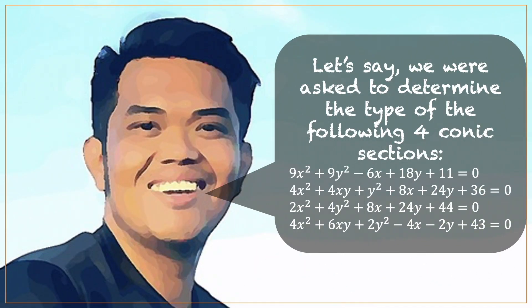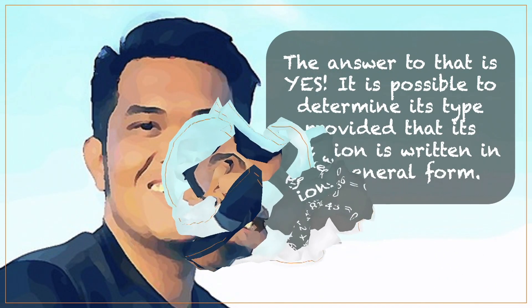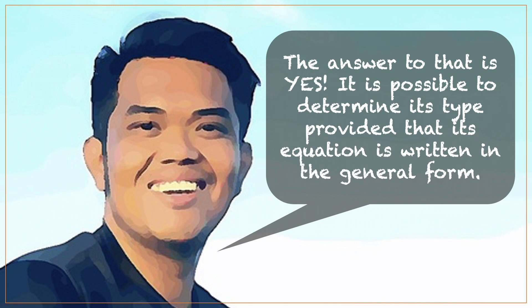For instance, let's say we were asked to determine the type of the following four conic sections below. Did you know that it is possible to determine the type of conic section without graphing it? It is possible by solving its discriminant and making sure that the numerical values of A, B, and C satisfy the given conditions for each type of conic section. However, it will be easier for us to solve for the discriminant if the equation of the conic section is written in general form.